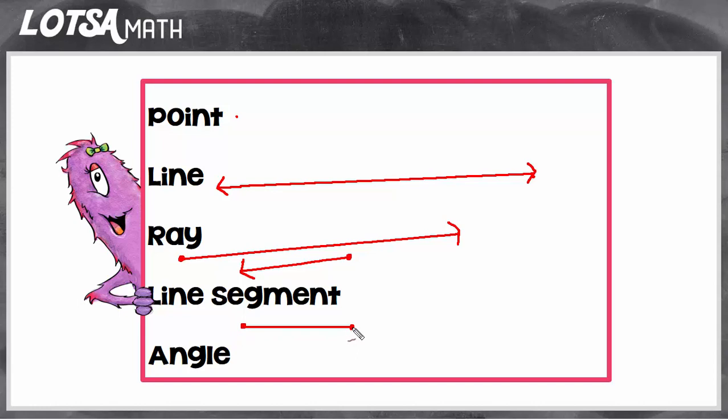The start and stop is sometimes shown with a little end circle, but not always. What makes a line segment a line segment is that it has a starting point and an ending point.